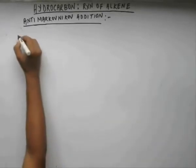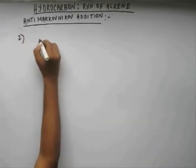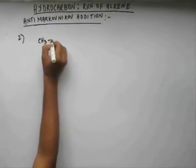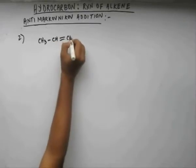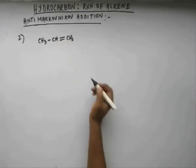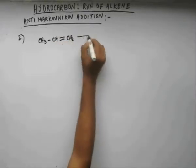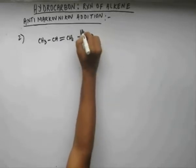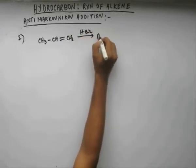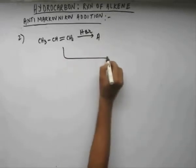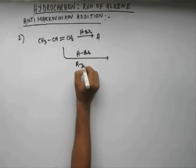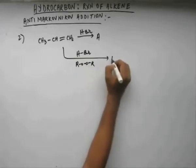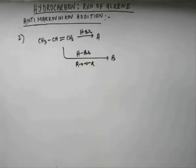Now let's solve another problem. Suppose I take propene and I am adding HCl to this. I am getting A. I am adding HBr and peroxide to this. I am getting B. You have to tell me what is the relation between A and B? This is pretty simple, straightforward.